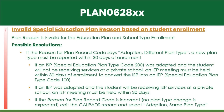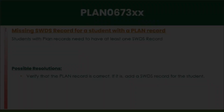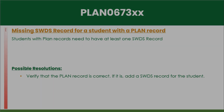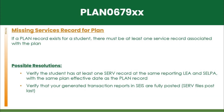Plan 0620: Your LEA has reported a plan file for a student with no status file. This often occurs with students coming from out of state if the meeting was not affirmed correctly. If a plan record exists for a student, there must be at least one service record associated with the plan.